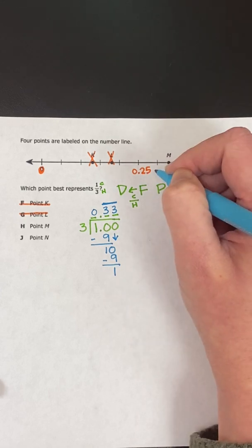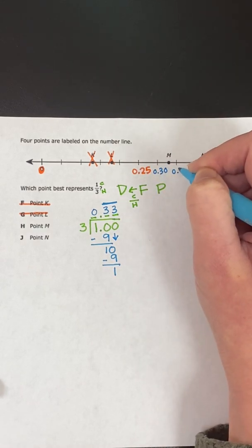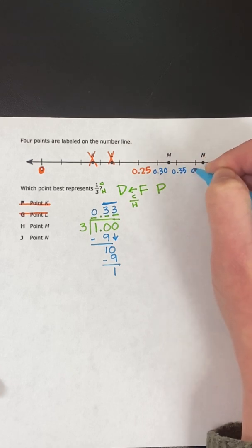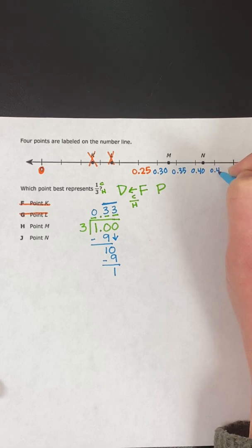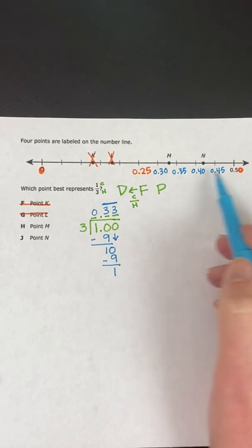So this is twenty-five cents. This one would be thirty cents. I have thirty-five cents. Forty cents. And forty-five cents. And that would get me to my fifty cents. So this is counting by fives between here.